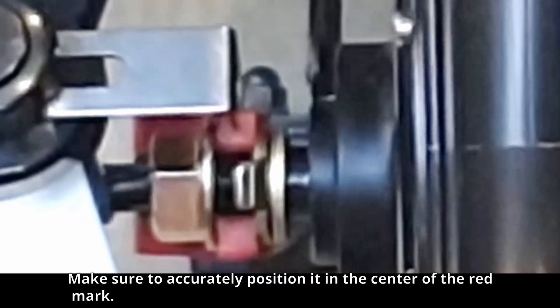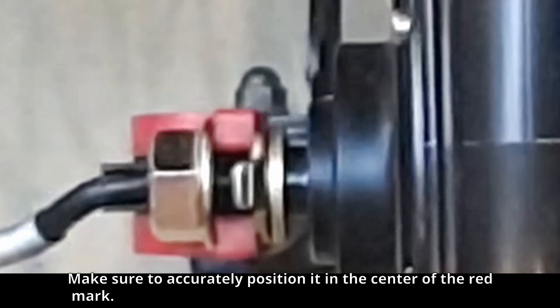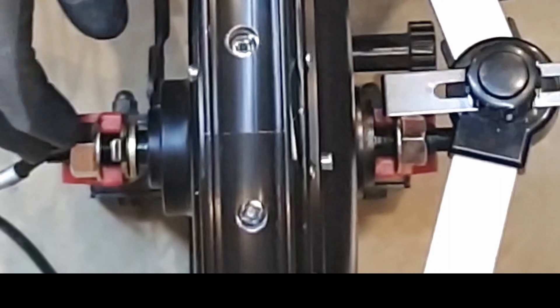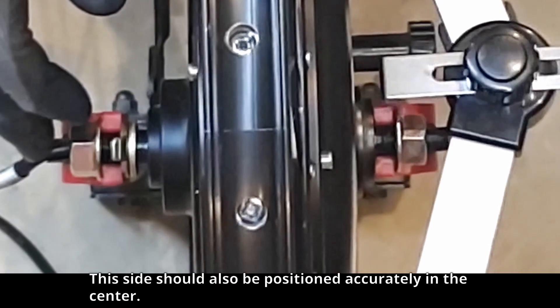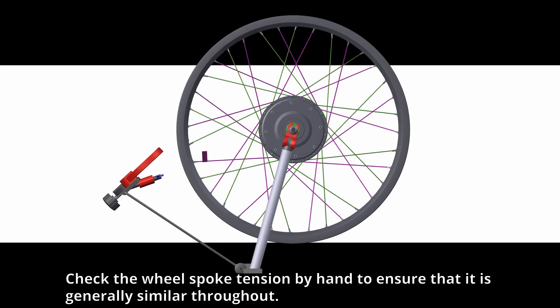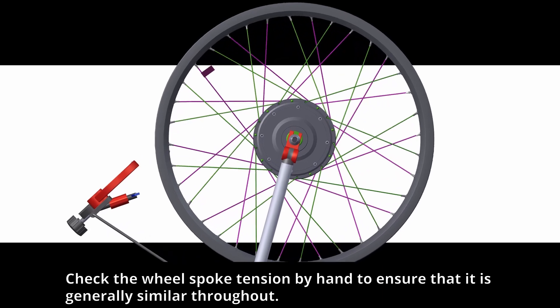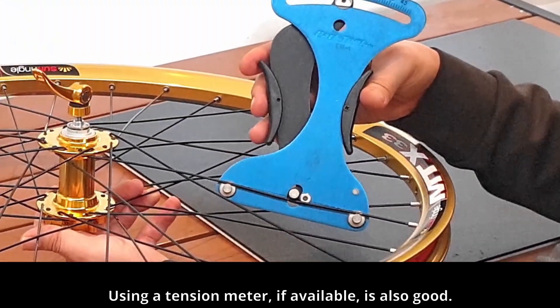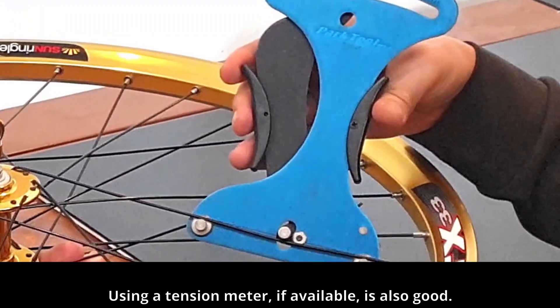Make sure to accurately position it in the center of the red mark. This side should also be positioned accurately in the center. Check the wheel spoke tension by hand to ensure that it is generally similar throughout. Using a tension meter if available is also good.